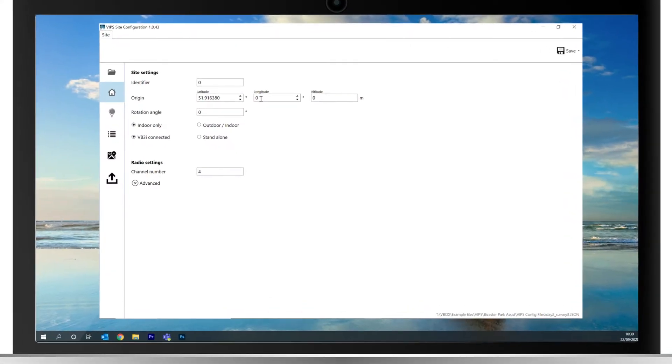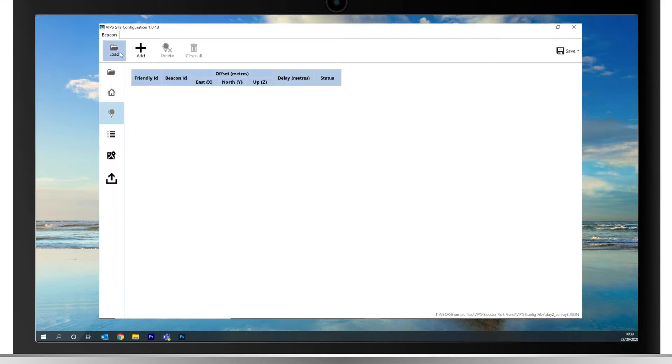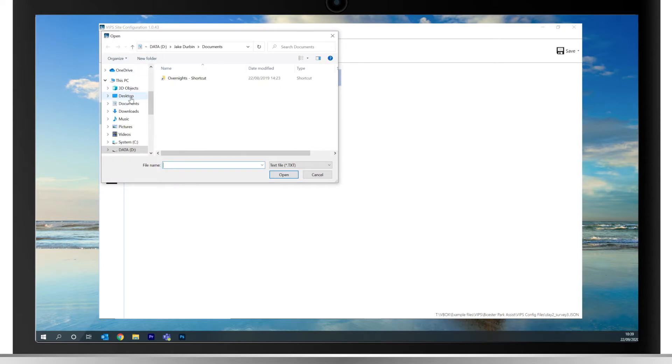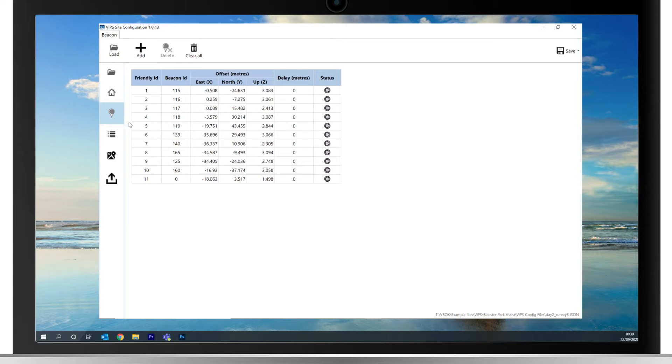Now switch to the VIPS Site Configuration software, create a new file and enter in your origin coordinates. Ensure the VB3i is connected and you are using the Indoor Only mode. Select the beacons page and load in your survey file. The ping table will now update and you will be able to upload the file to the rover.